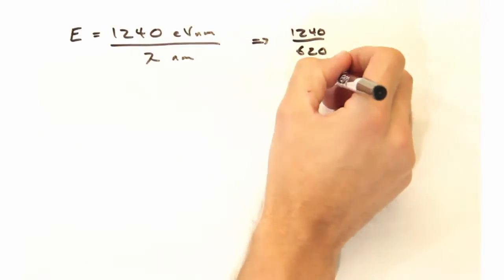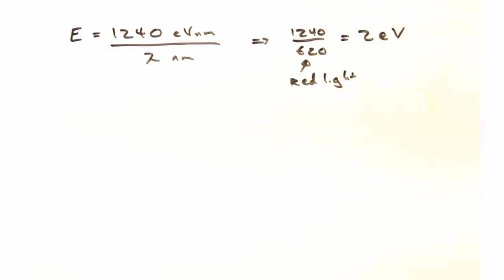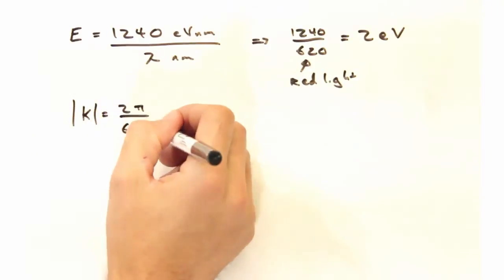So a handy dandy rule to keep in mind is that the energy of light can be converted to wavelength with this formula here, and so we can see that if we have incident red light, say at 620 nanometers, we're going to be dealing with 2 eV light.